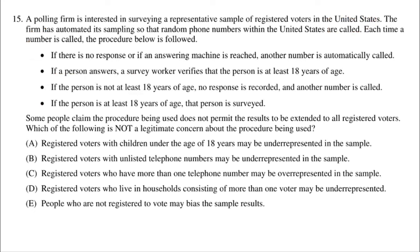A polling firm is interested in surveying a representative sample of registered voters. The firm automated its sampling by dialing random phone numbers. If there's no response or an answering machine, another number is dialed. If a person answers, a survey worker verifies the person is 18 or older — if not, they move on. If the person is at least 18, they are surveyed. Some people claim this procedure does not permit results to be extended to all registered voters. Which of the following is not a legitimate concern?